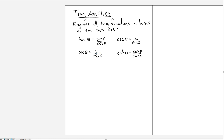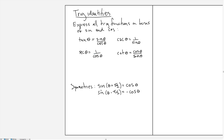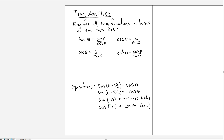Next, some actual identities — for example, symmetries. The sine and cosine functions have some interesting relationships. If you shift the sine function to the left by π/2, you get the cosine function. If you shift it to the right by π/2, you get minus the cosine function. Another symmetry: the sine function is an odd function and the cosine is an even function.